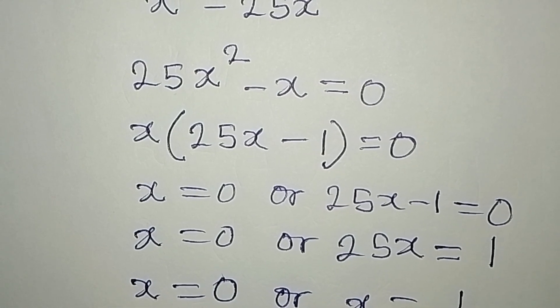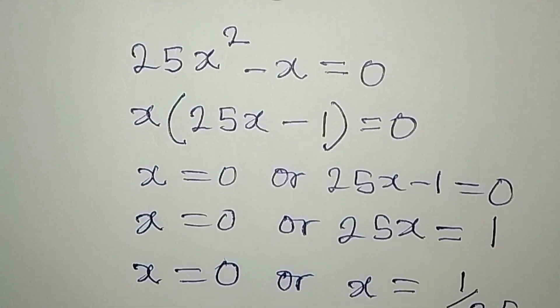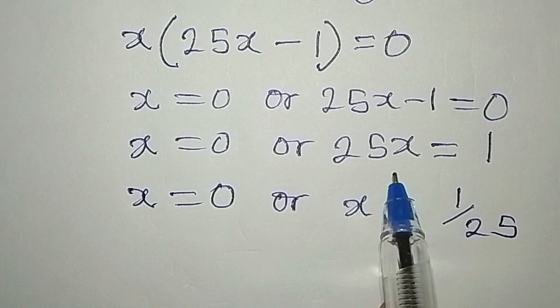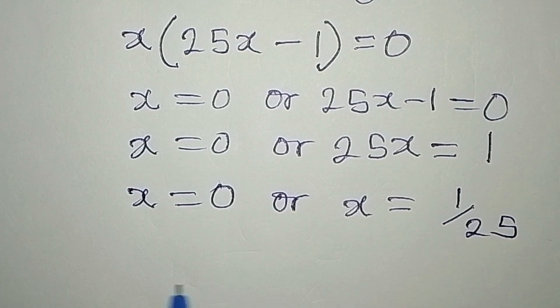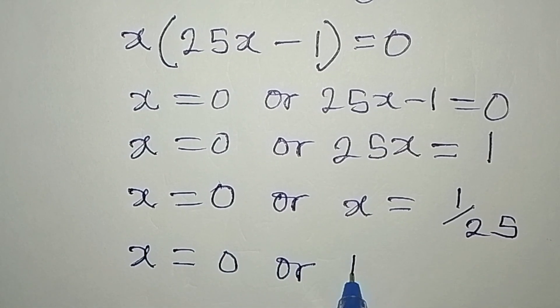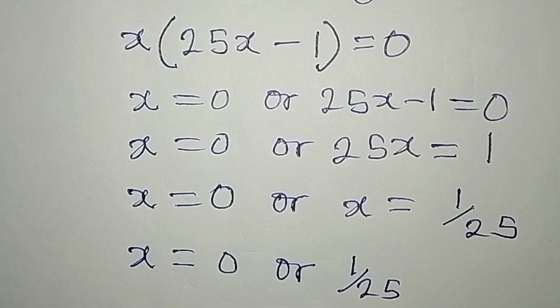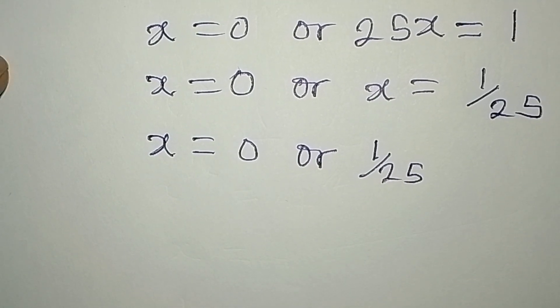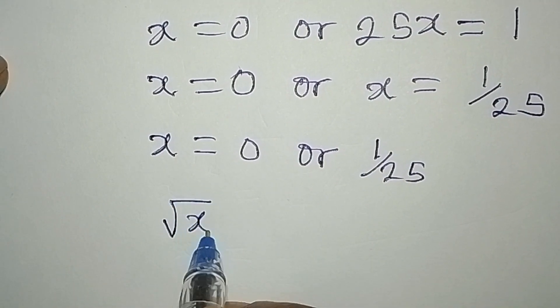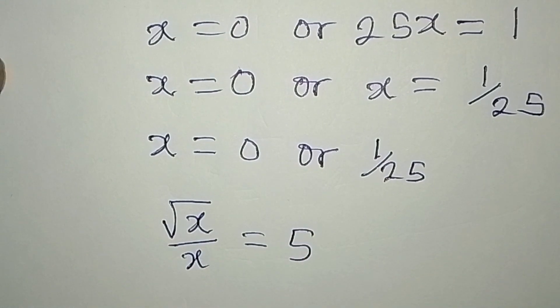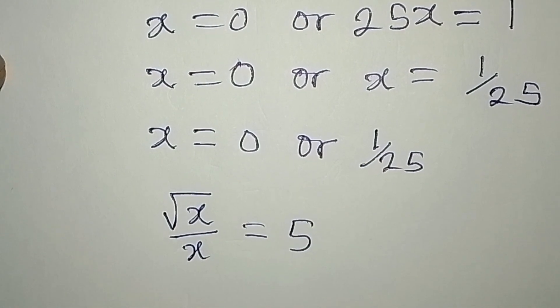Now our x is equal to zero or one over 25, so we're going to put these two values into the problem. We got square root of x over x equals five. Now if I put in zero, you can see that you're getting five on the right hand side. Square root of zero over zero—